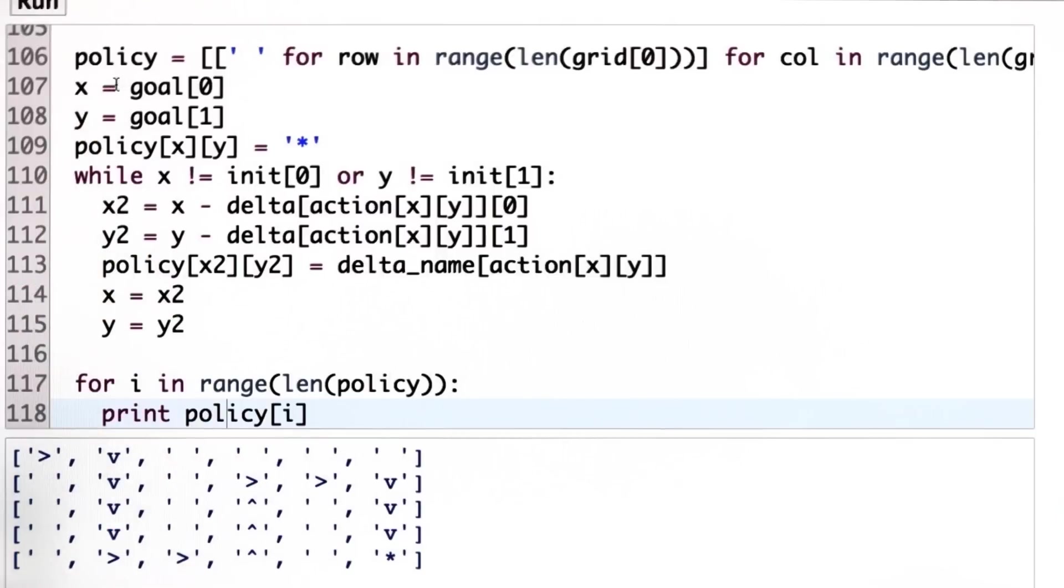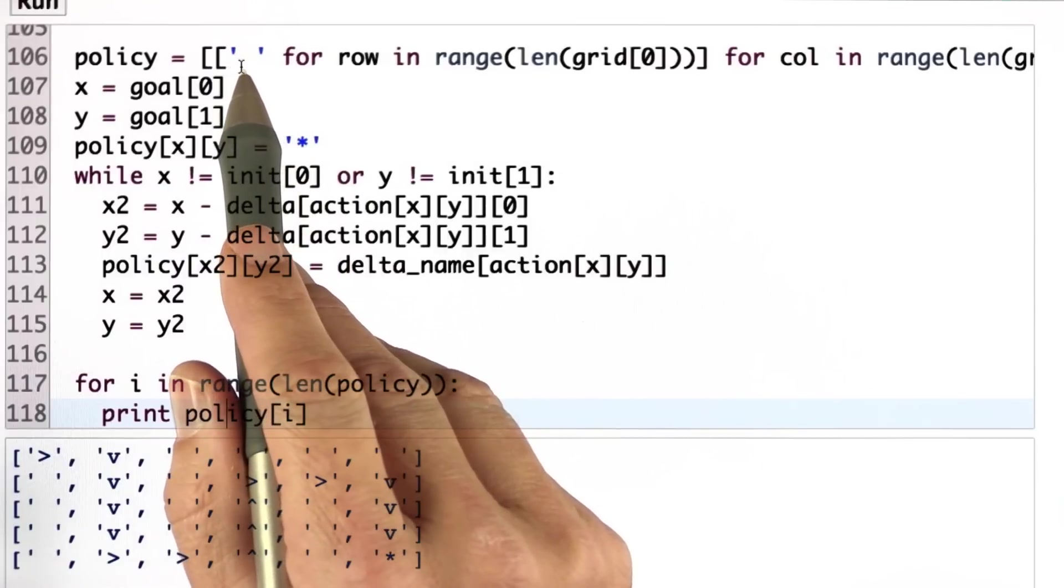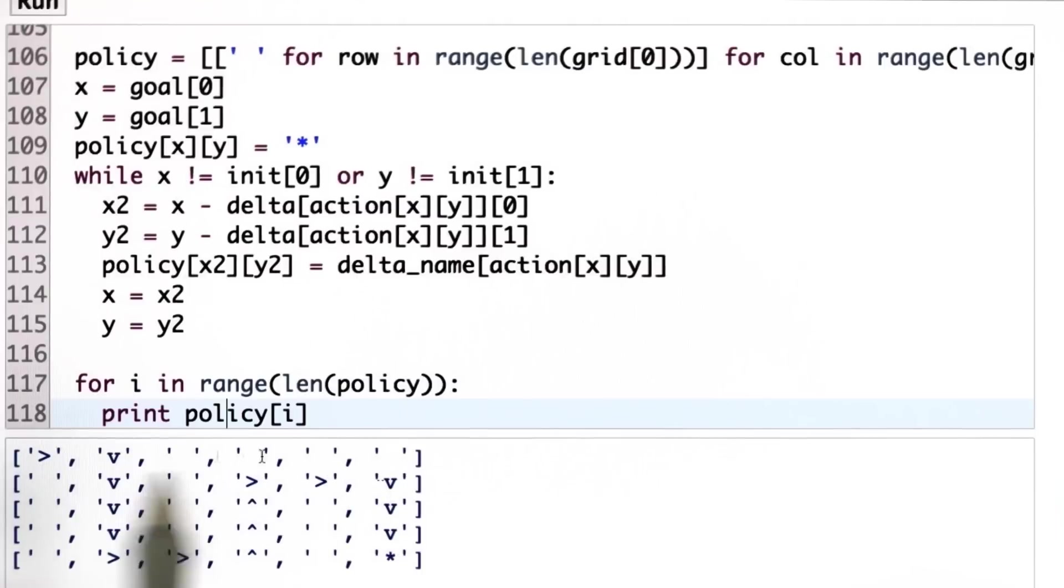This will be compiled into a field called policy or plan, which I initialize with blanks, but was the same size as grid. This is the field over here, which I eventually print out down here.